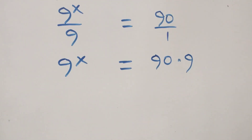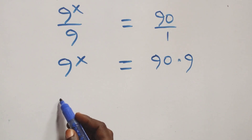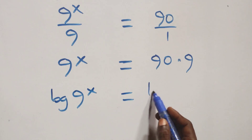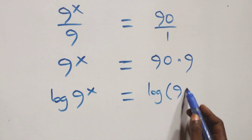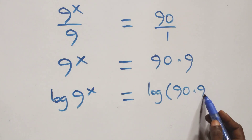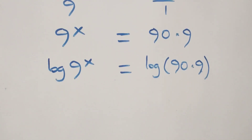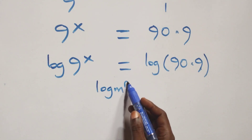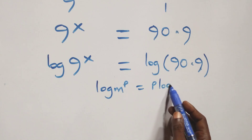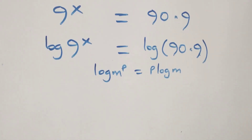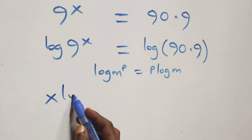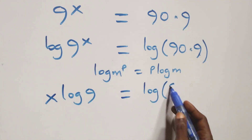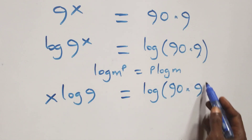The next step, we take the log on both sides. We have log 9 raised to power x equals to log of 90 times 9. The next step, we apply the power log rule. When we have log n raised to power p, this is the same as p log n. This becomes x log 9 equals to log of 90 times 9.